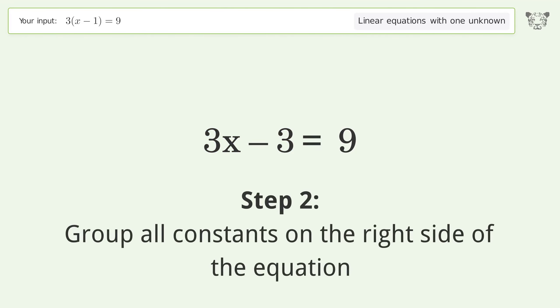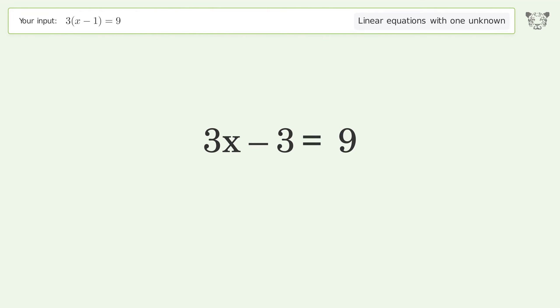Group all constants on the right side of the equation. Add 3 to both sides. Simplify the arithmetic.